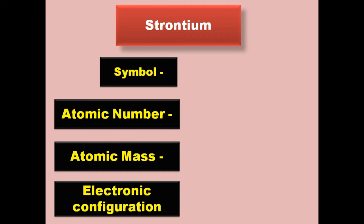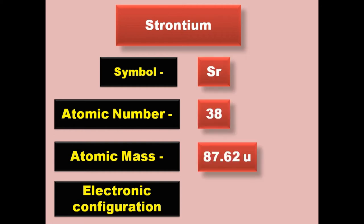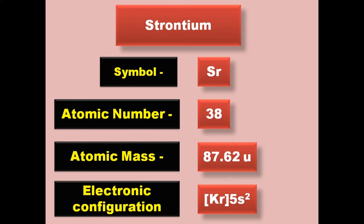Strontium has symbol Sr, atomic number 38, atomic mass 87.62, electronic configuration [Kr] 5s2. Strontium is an alkaline metal and exists in solid form at room temperature.